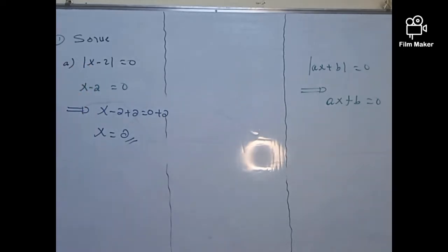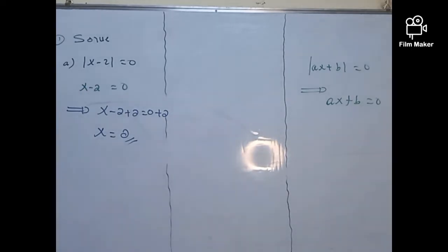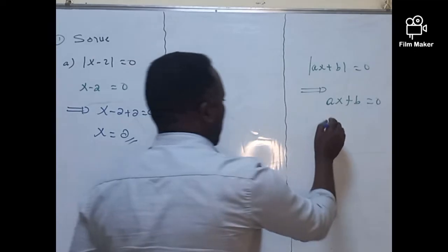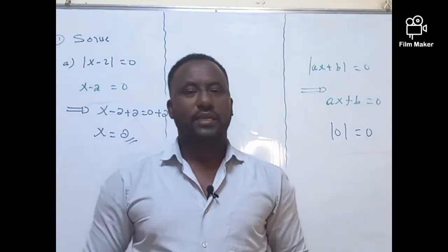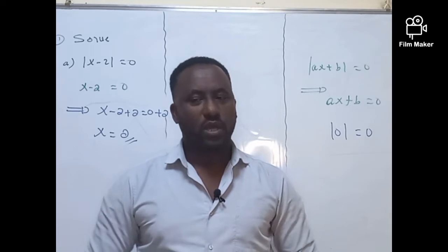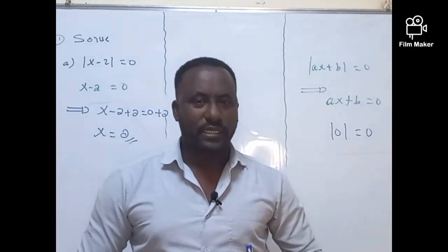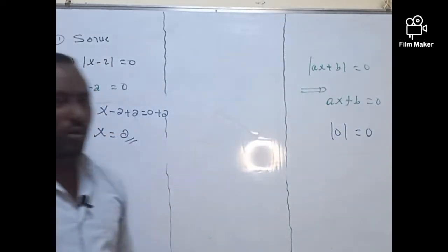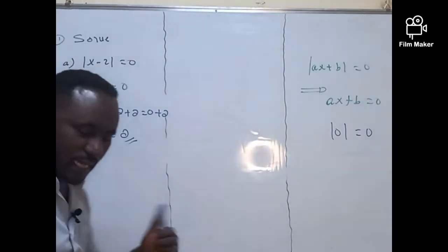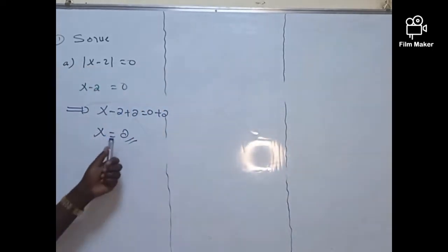The absolute value of zero is zero. What's the reason? The absolute value of zero is zero. So this is what it means. That's completely zero, because there is no distance between the points. The distance between the points is always zero. So the correct solution for this one is zero.